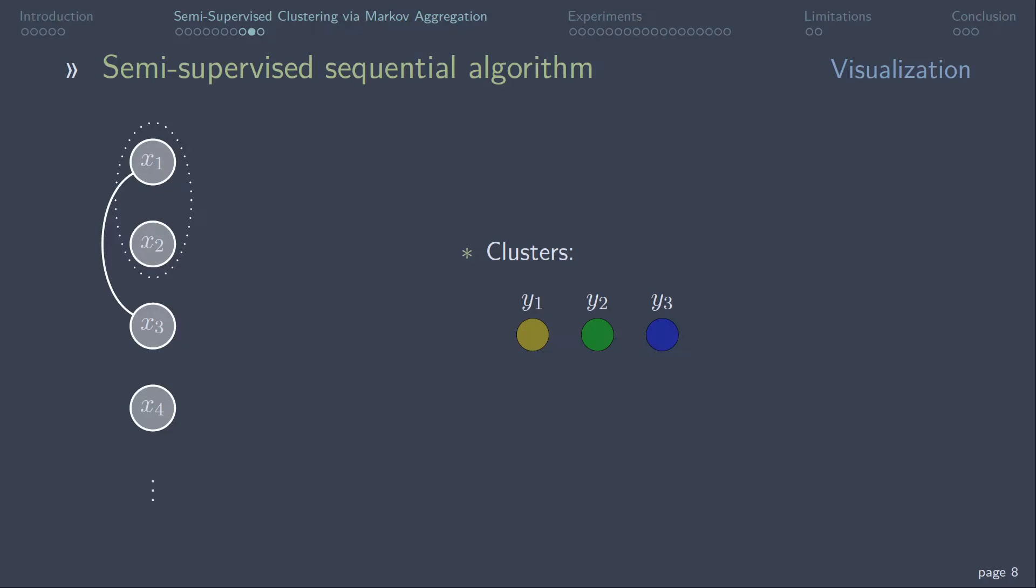In the beginning, the graph has to be initialized. A random coloring is not sufficient as we want to ensure that the pairwise constraints are fulfilled. This is solved by a greedy coloring algorithm. Each constrained node is assigned to the first color available. Unconstrained nodes are randomly colored.